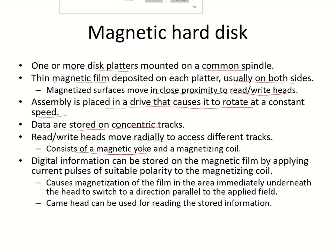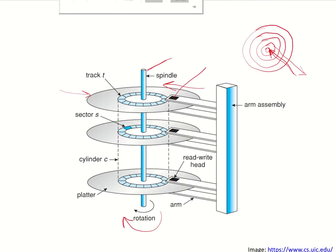The head also consists of a magnetic yoke and a magnetizing coil. Digital information can be stored on the magnetic film by applying pulses of suitable polarity to the magnetizing coil of the read-write head. This causes magnetization of the film on the platter only in the area immediately below the head, and this magnetization will switch in a direction parallel to the applied field. The same head can also be used for reading the stored information. This is the arm assembly which helps in moving the read-write head forward or backward from the track.